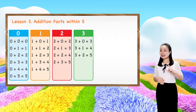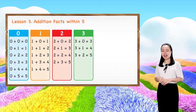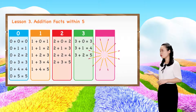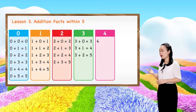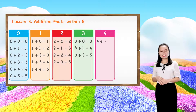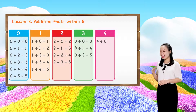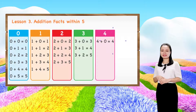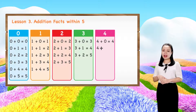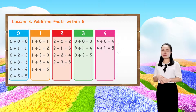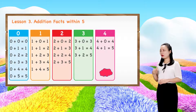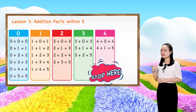Next, let's learn addition by fours. 4 plus 0 equals 4. 4 plus 1 equals 5. We'll stop here for now.